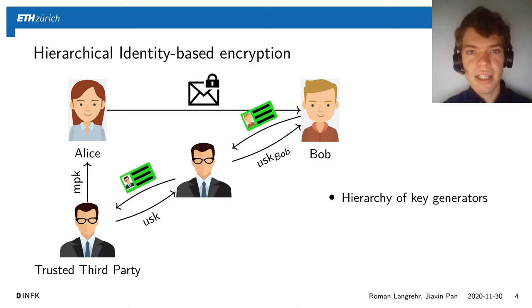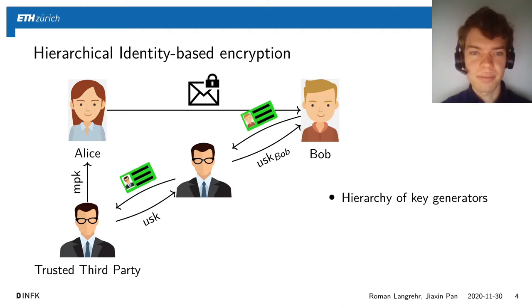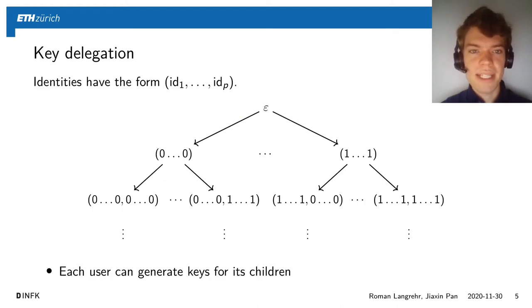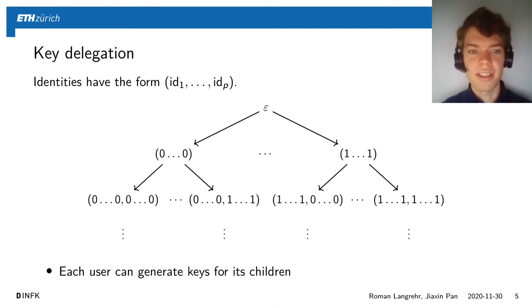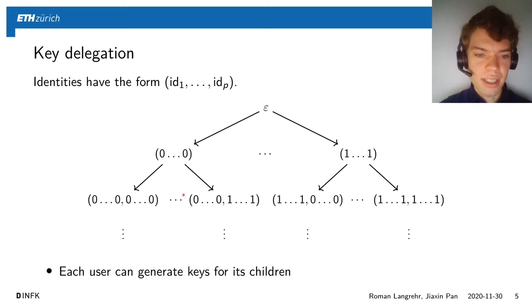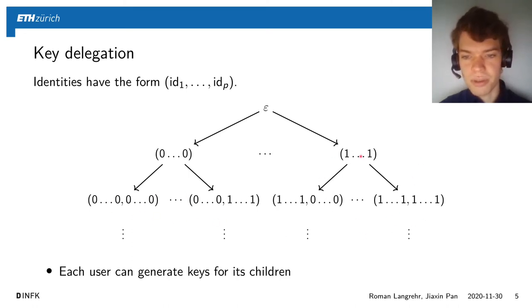In hierarchical identity-based encryption we don't have a single authority that generates all the user secret keys, but a hierarchy of key generators. More precisely, identities are tuples, and everybody can generate a user secret key for someone else if his identity is a prefix of the other person's identity. So for example, the user here can generate the user secret keys for the users below him but not for others.